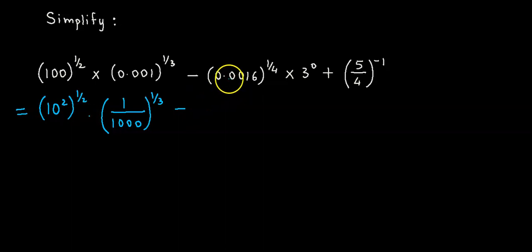Minus. Now this term could be expressed as 16 upon 1, 2, 3, 4 - four decimal places. So 16 upon 10000, the whole thing raised to 1 by 4.